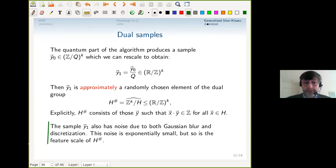Now this is key to the hard part: the sample y is not a perfect sample. It has noise from two sources—noise from Gaussian blur and noise from discretization because we did the Fourier transform on a radix of Q rather than the ideal infinite Fourier transform, which we cannot do. This noise is exponentially small to a scale that we like, but we have to match it to the exponentially complicated feature scale of this dual group H^♯.